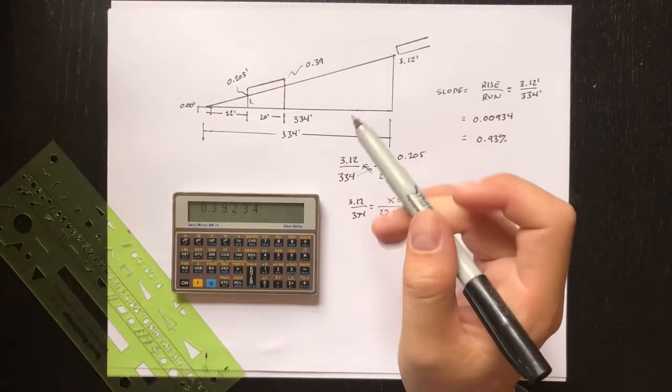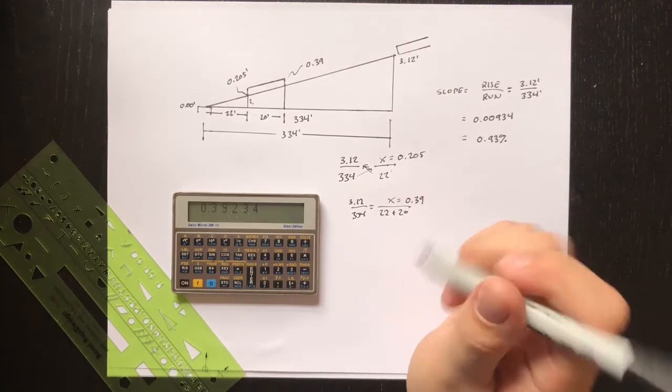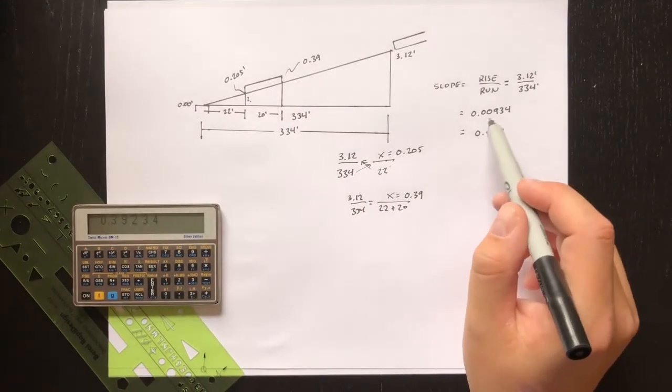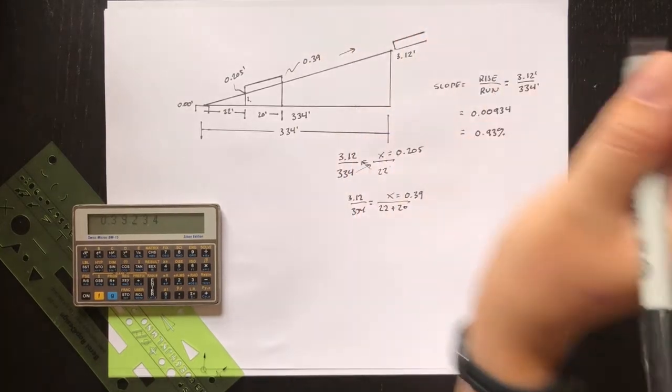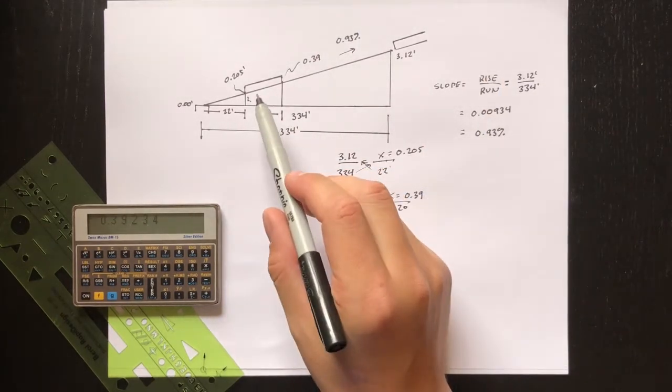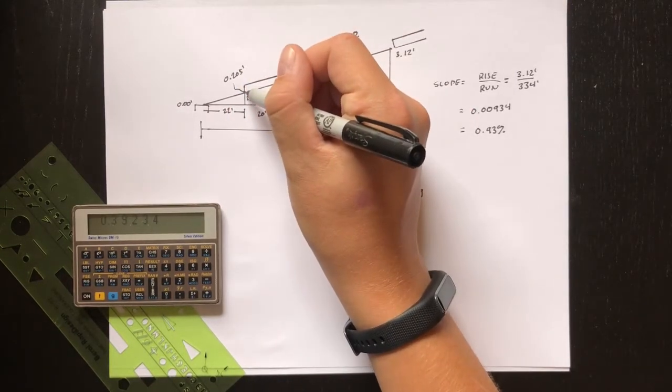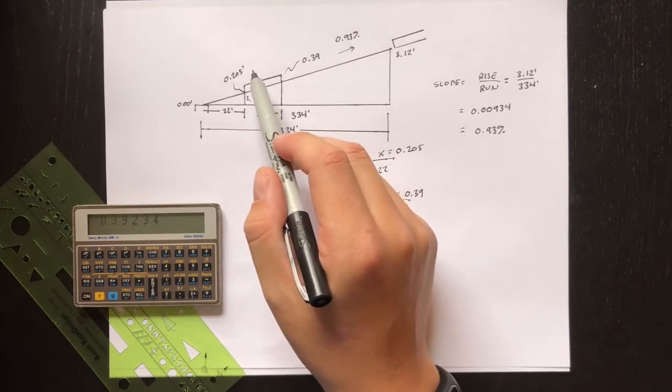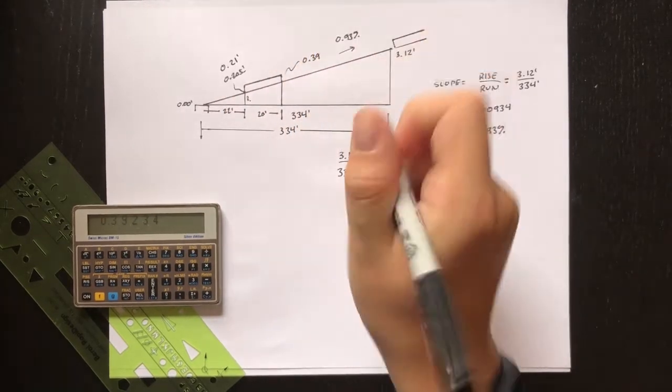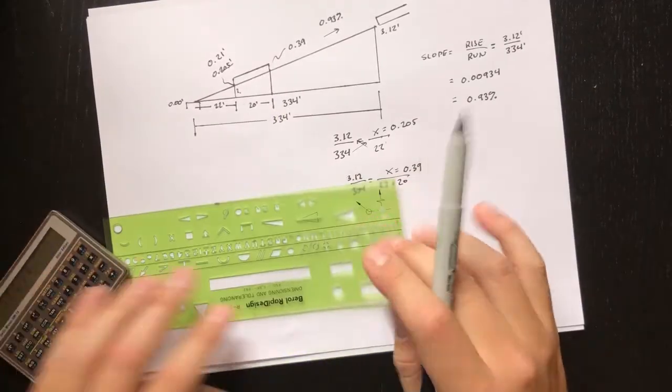A lot of times you're not going to be drawing out triangles while you're out on the site trying to do dirt work. A lot of times what you're doing is figuring your slope as you go. Say we came along earlier and we already figured out that the slope or grade uphill here is 0.93%. We can actually use that number to very quickly figure out how to go from one point to another point. Say we're here at this point and we've already dug down and gotten our elevation set to 0.21 feet.